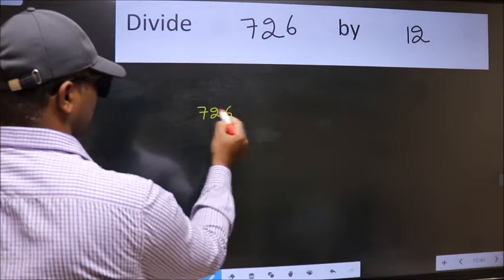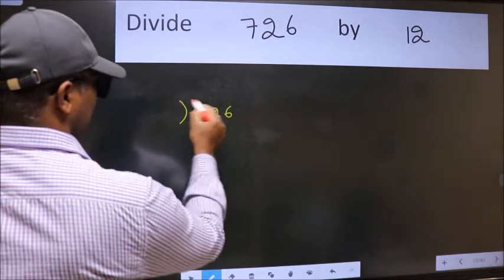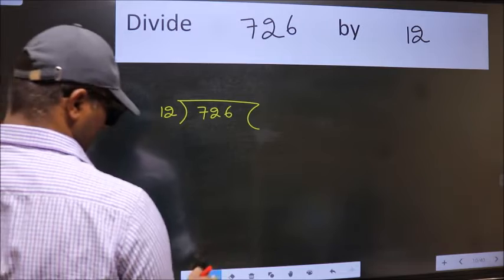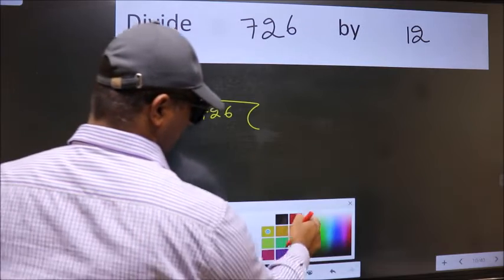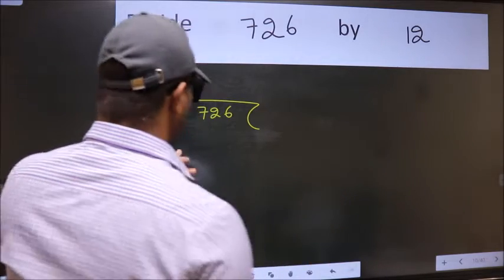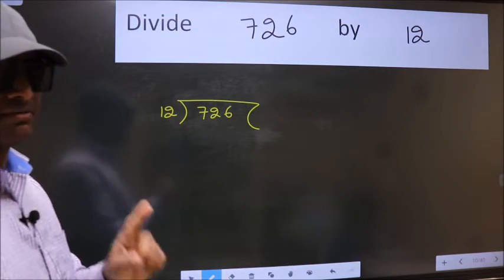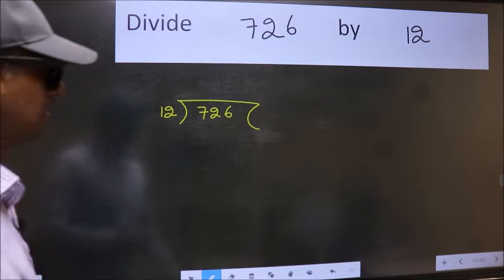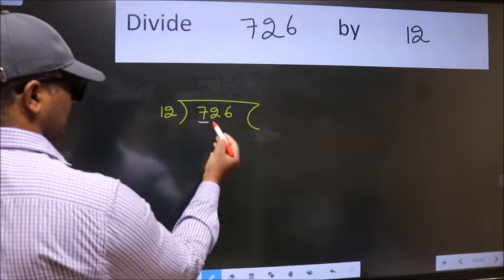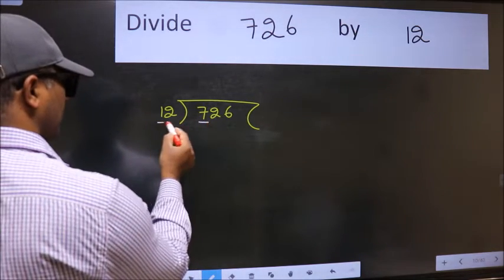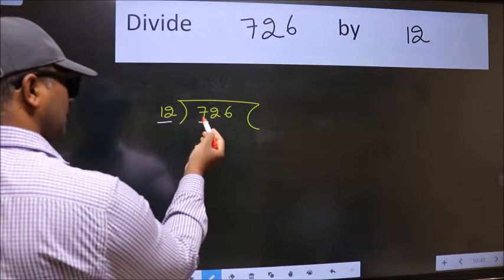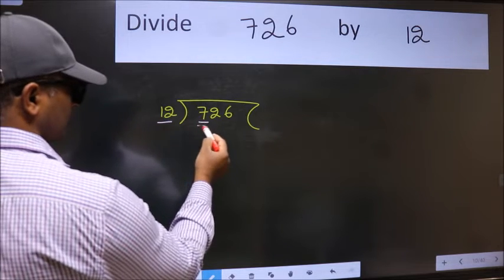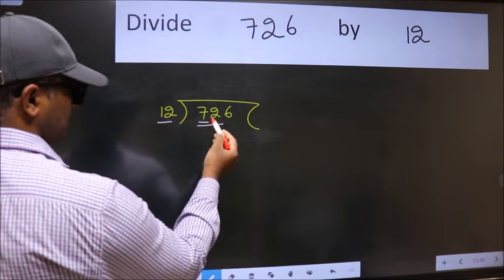726 here, 12 here. This is your step 1. Here we have 7 and here 12. 7 is smaller than 12, so take two numbers: 72.